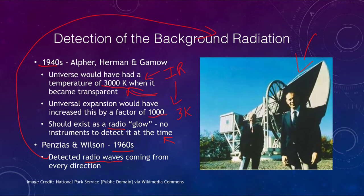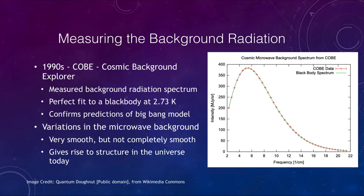With better instruments we can now measure this in more detail. In the 1990s, COBE — the Cosmic Background Explorer — measured the radiation spectrum and found it to be a perfect fit to a blackbody of 2.73 Kelvin. If you look here, the green line is the blackbody spectrum and the COBE data are shown in red — they match up almost perfectly. We don't generally get experiments that match that perfectly, so this confirms the predictions of the Big Bang model extremely well.